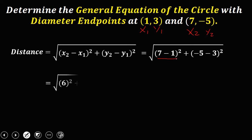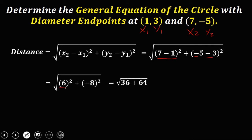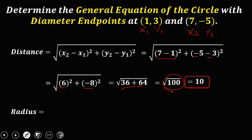Simplifying: 7 minus 1 is 6, and negative 5 minus 3 is negative 8. Then 6 squared is 36 and 8 squared is 64. So 36 plus 64 gives square root of 100, which is 10. So 10 is the length of the diameter. Since the radius is half the diameter, 10 divided by 2 gives a radius of 5.